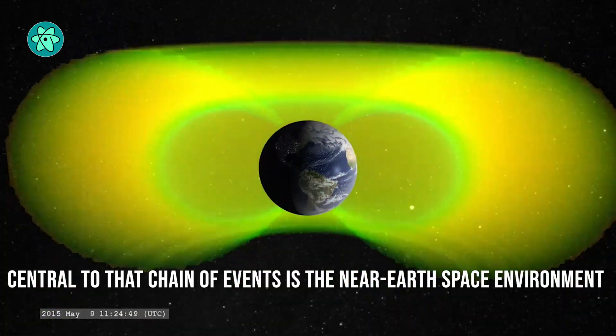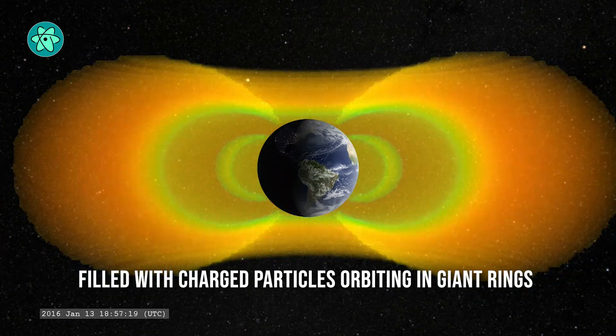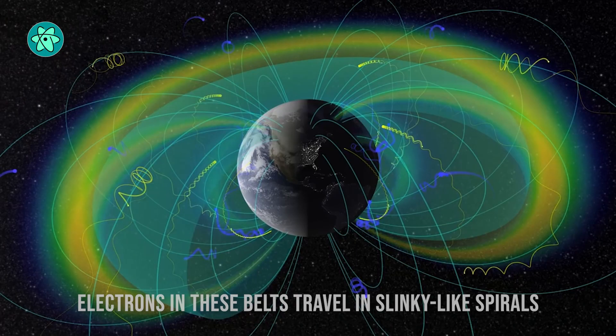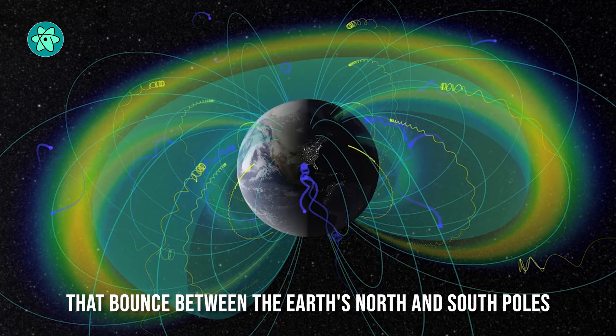Central to that chain of events is the near-Earth space environment, filled with charged particles orbiting in giant rings around the planet, called Van Allen radiation belts. Electrons in these belts travel in slinky-like spirals that literally bounce between the Earth's north and south poles.